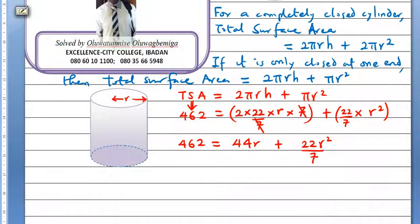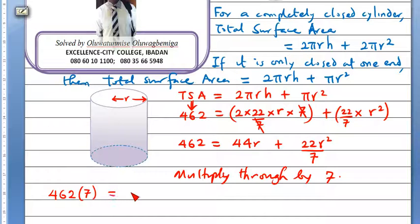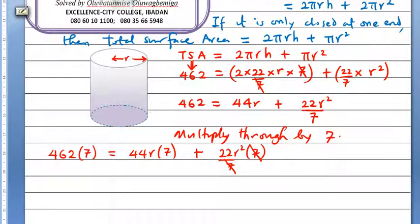Now, I want to multiply through by 7. If we multiply through by 7, we are going to have 462 into 7, 44 r into 7 plus 22 r square over 7 into 7. This now cancels, and then we are left with 3234 is equal to 308 r plus 22 r square.